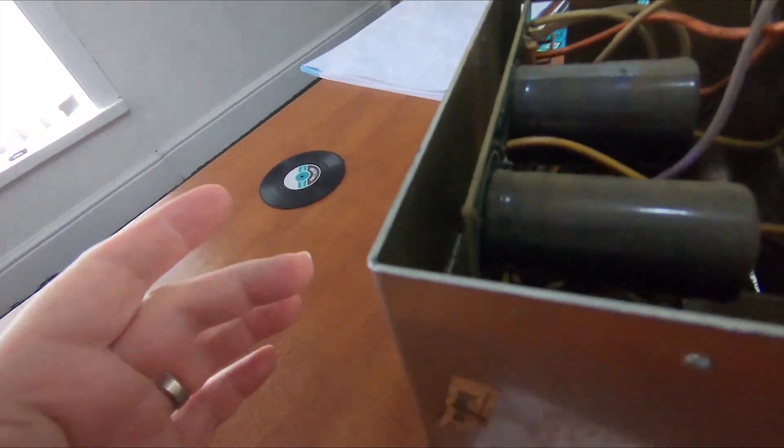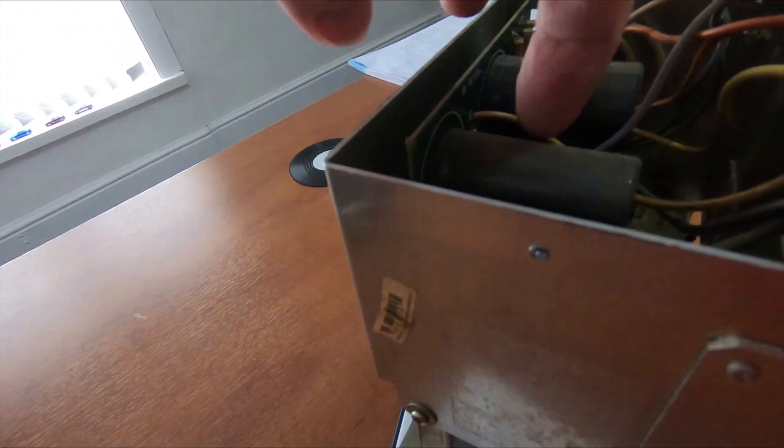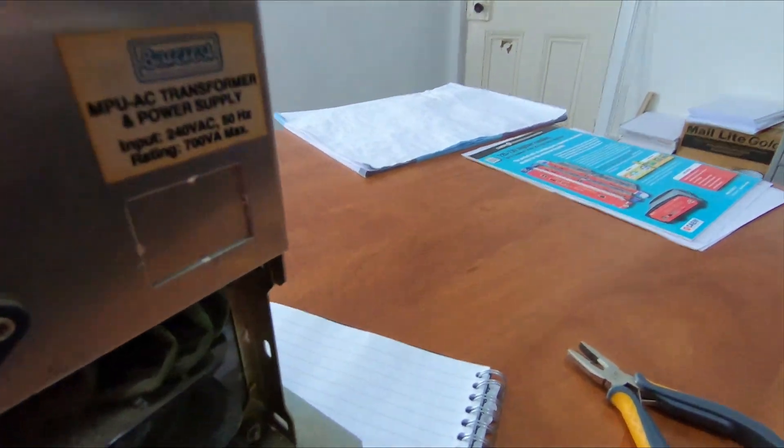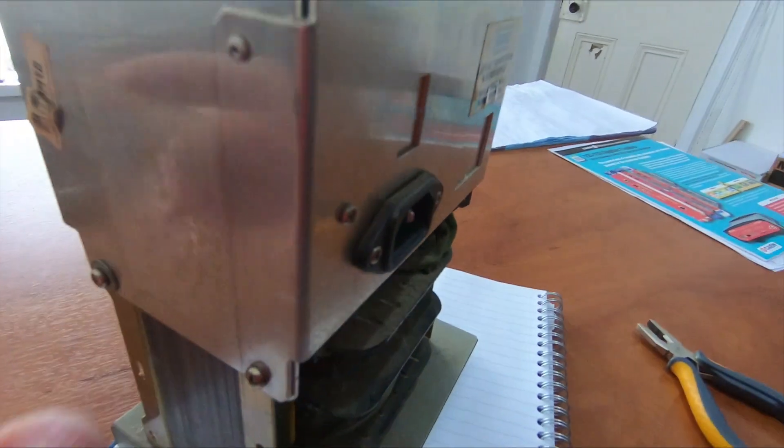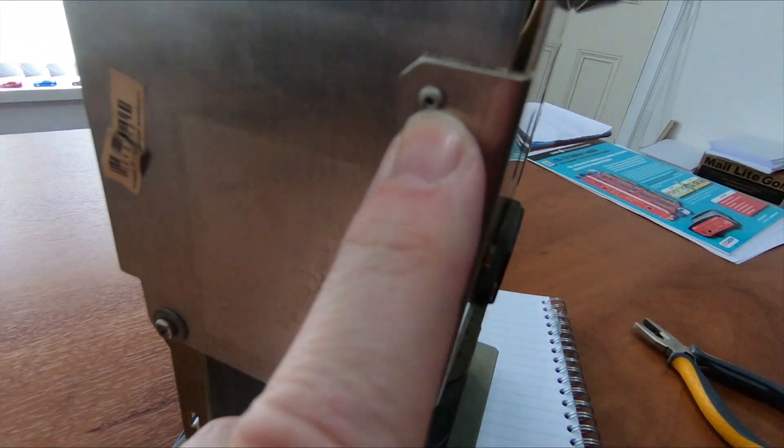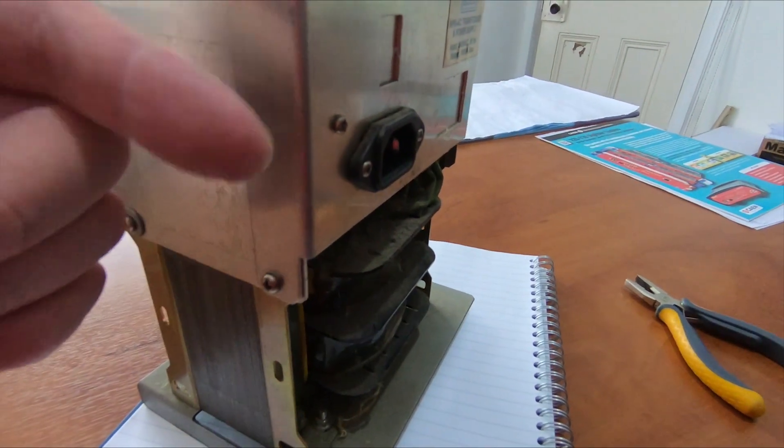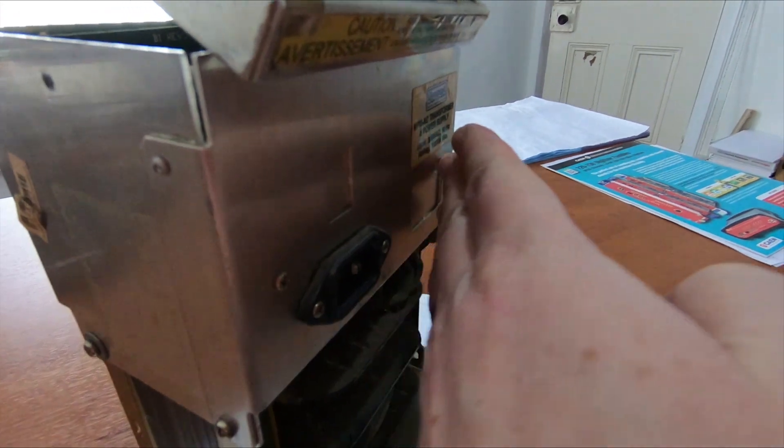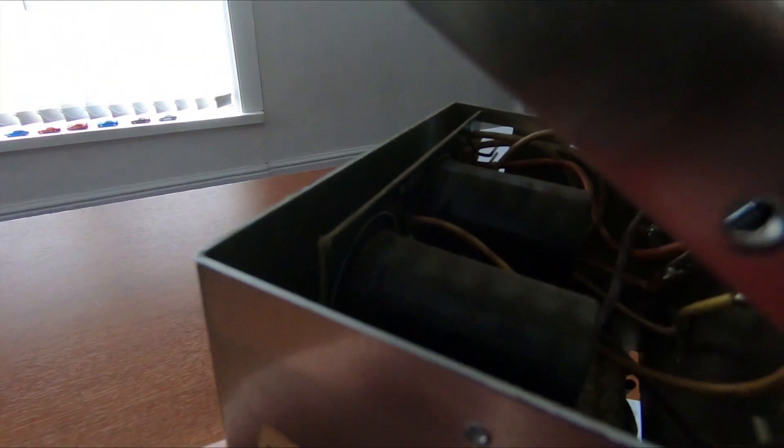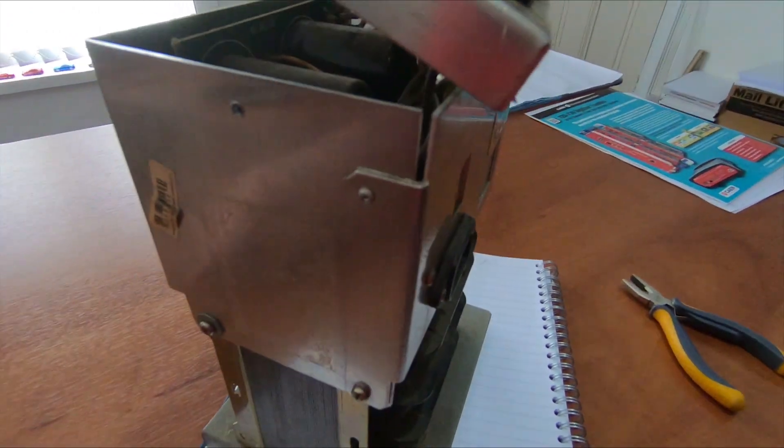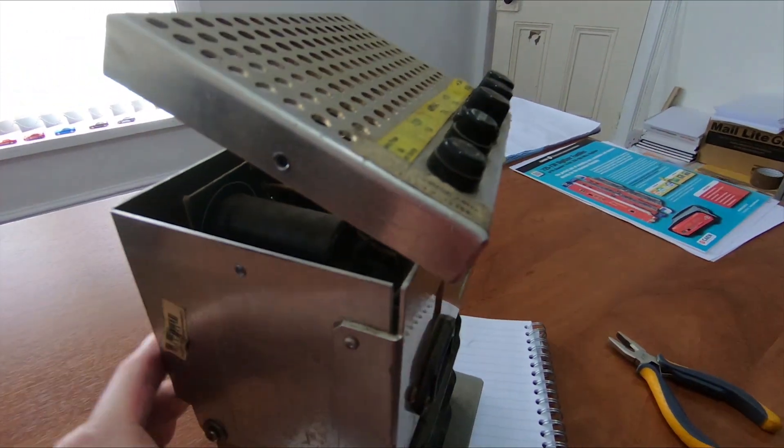The rectifiers are bolted in with nuts further down so I need to get to the front. I think what I need to do is drill out this rivet, take out the screw from the bottom, and then this metal plate should bend out enough where I can access the bolts.